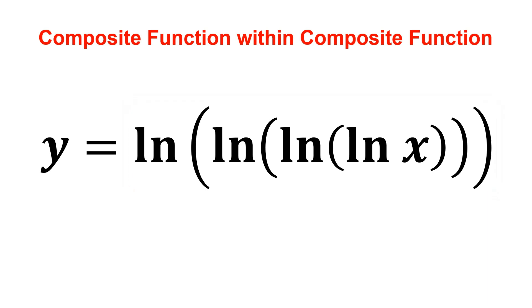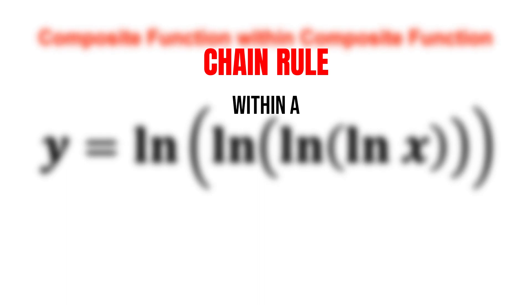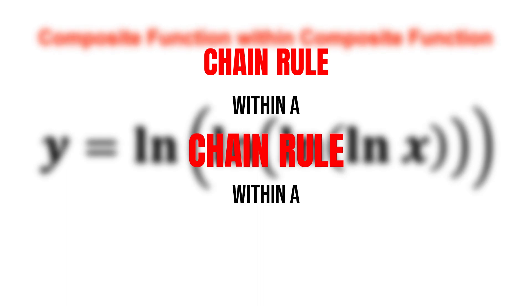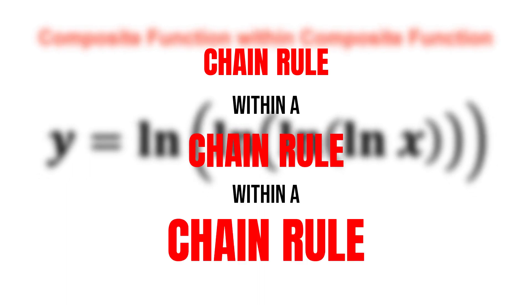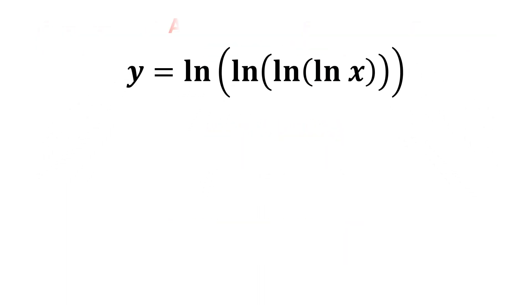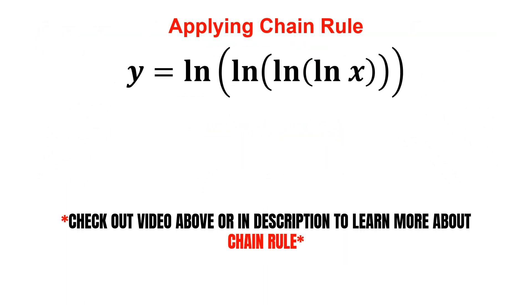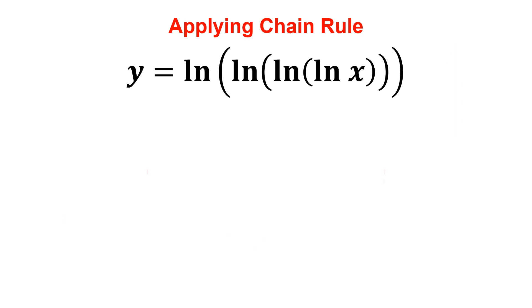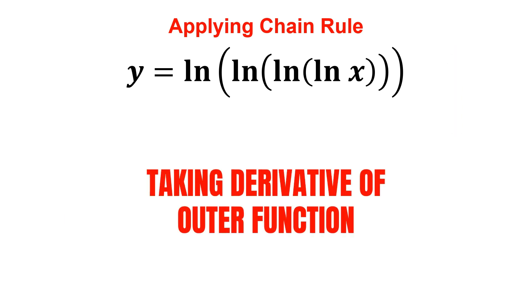Since we have a composition of functions inside a composite function, we apply the chain rule within a chain rule and within a chain rule. You may check out the linked video if you're not familiar with it. We first start by differentiating the outer function.